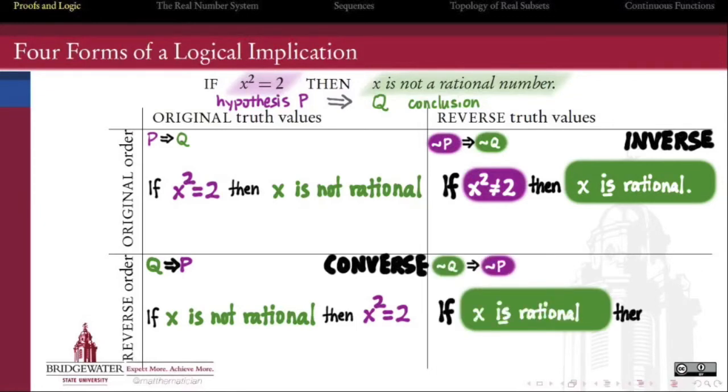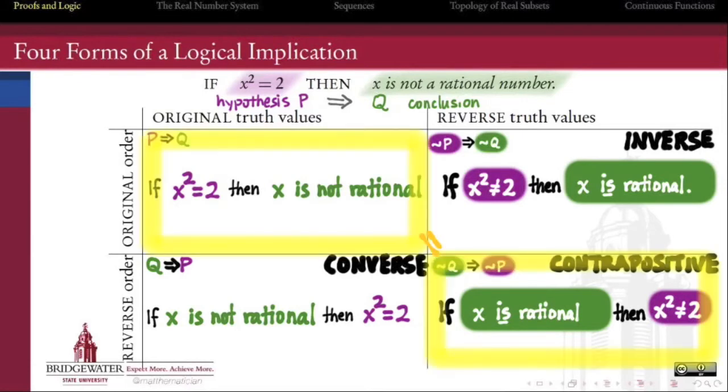Just like when double negatives make a positive, each of the single reversals, known respectively as the inverse and the converse, is not equivalent to the original statement. But the double reversal, the contrapositive, is equivalent to the original.